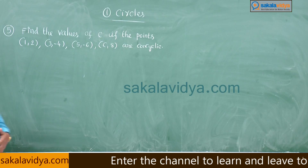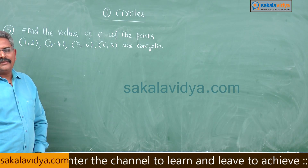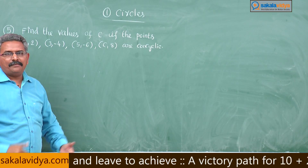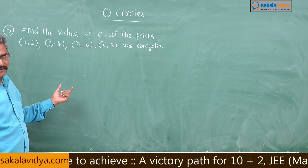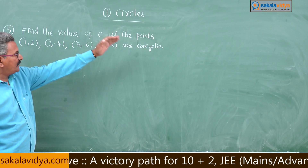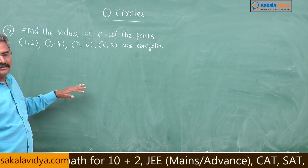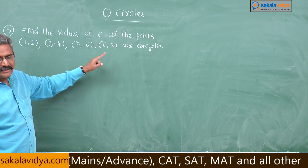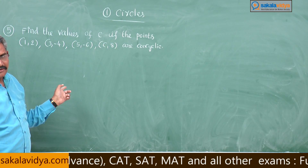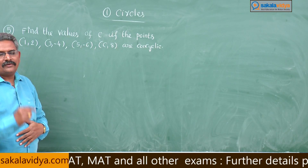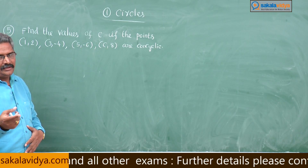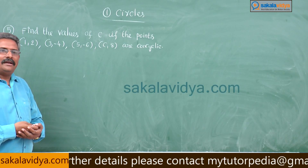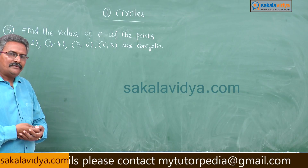This is a very important problem. First, let us find the equation of the circle passing through the three known points. Since the four points are concyclic, the fourth point must also lie on that circle — it must satisfy the equation. After substituting (C, 8) we get a quadratic equation in C, and by solving that quadratic the value of C can be evaluated.